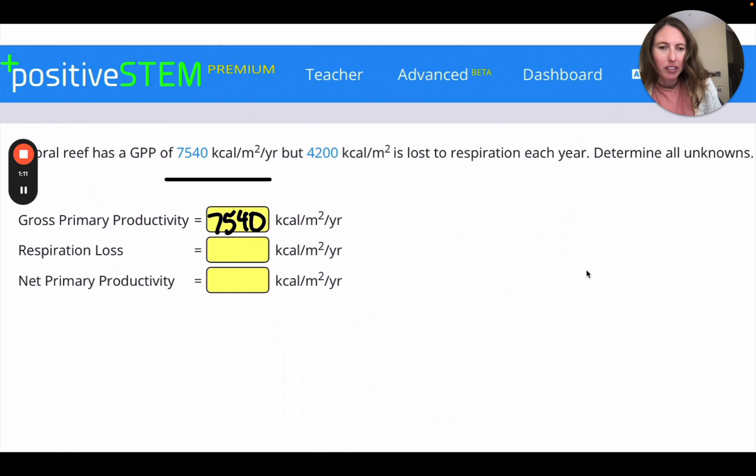But 4,200 kilocalories per square meter is lost to respiration each year. So put that in the respiration loss. Determine all unknowns.